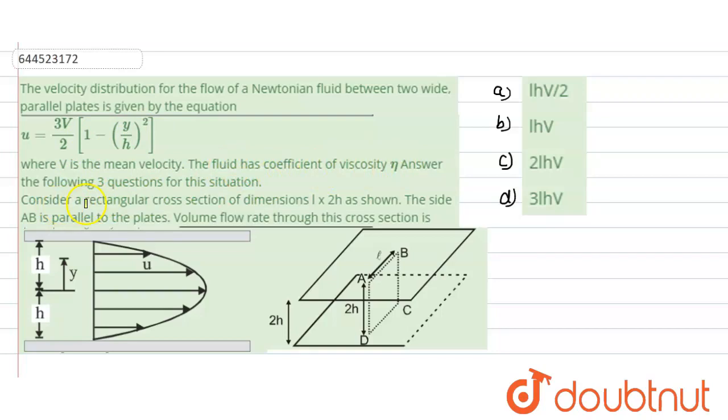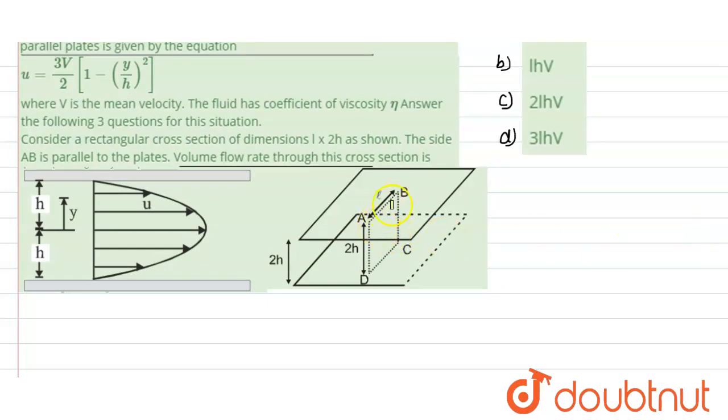Now we need to answer the question: consider a rectangular cross section of dimension l × 2h as shown. The side AB is parallel to the plates. Volume flow rate through this cross section is what? So this is the cross section which has been mentioned. We need to find the volume flow rate through this cross section.